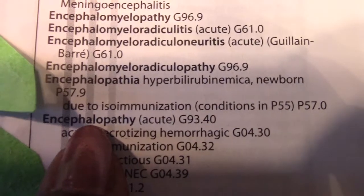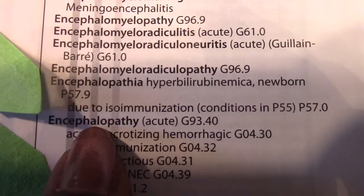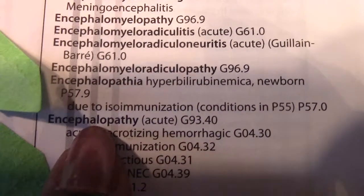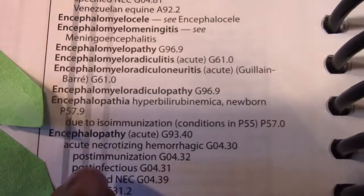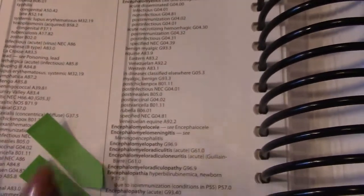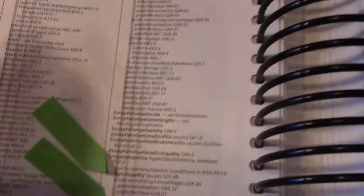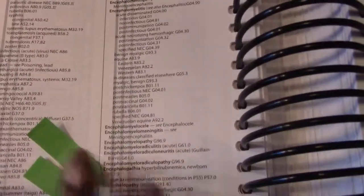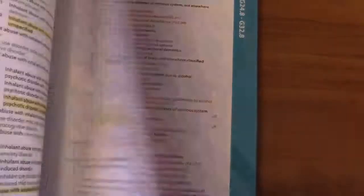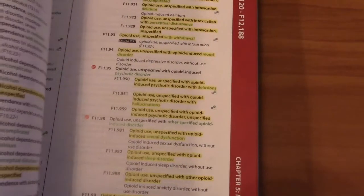That's Part Two of medical coding of encephalopathy. Use your code books, learn the language of your code books — it takes practice. The main thing is to follow the notes in your code book to find a code, and then always confirm your code in the tabular to see what it tells you about each code as you find it.